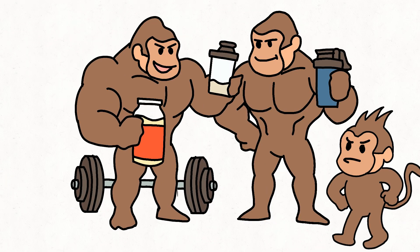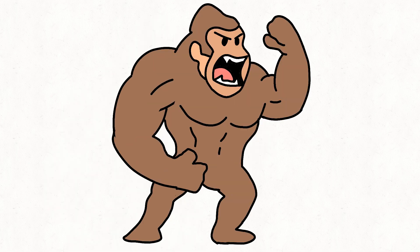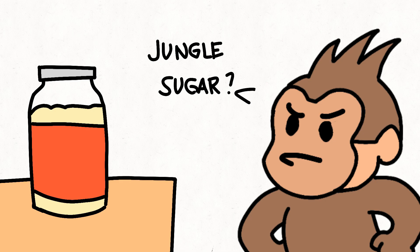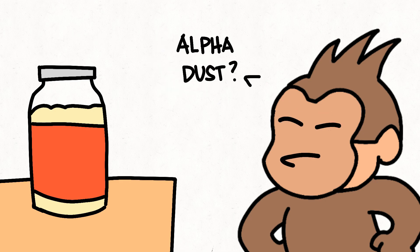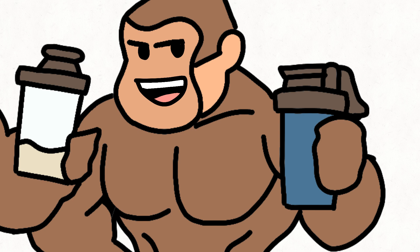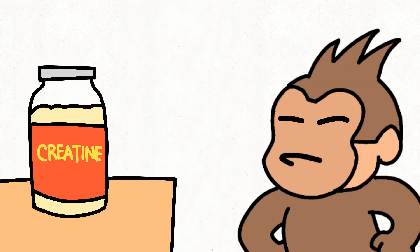Monkey in jungle gym sees Big Ape scoop white powder, mix in bottle, drink, and roar like thunder. Monkey is confused. What is that? Jungle sugar? Coconut powder? Alpha dust? Big Ape smiles. No, little monkey. It's creatine.